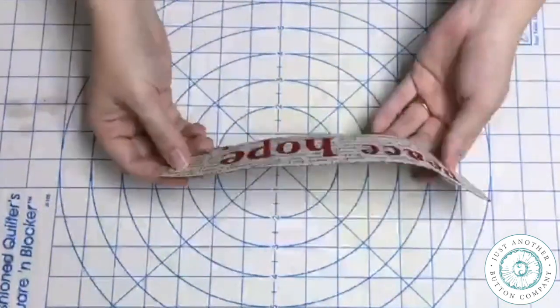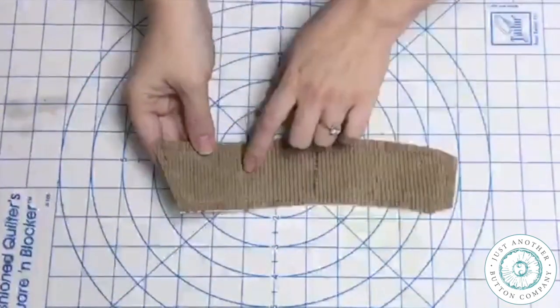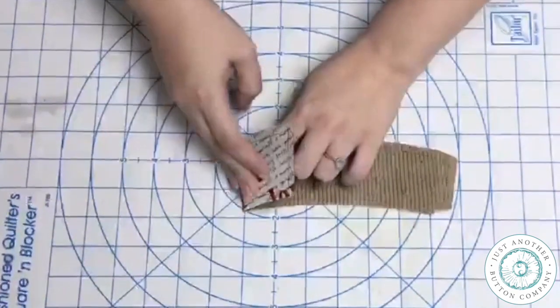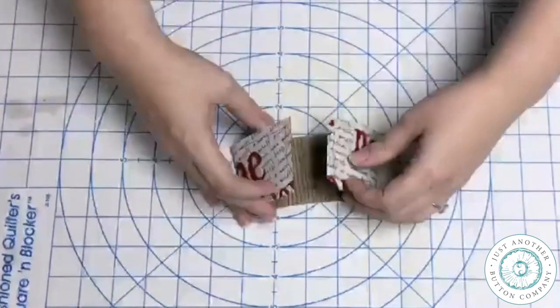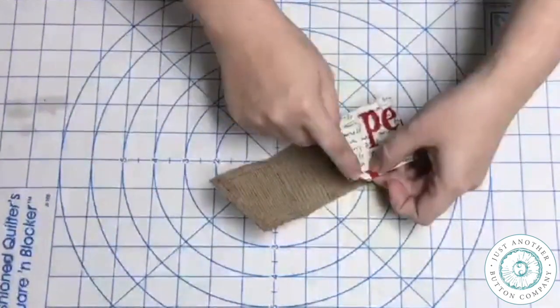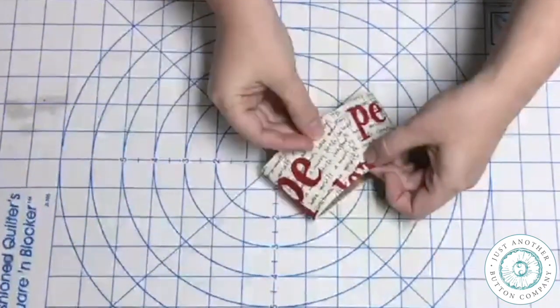And now it's time to fold this up and sew it together. So I'm going to fold it where it was folded when I originally took it apart and I'm going to overlap the ends. The notched edge should be on the bottom.